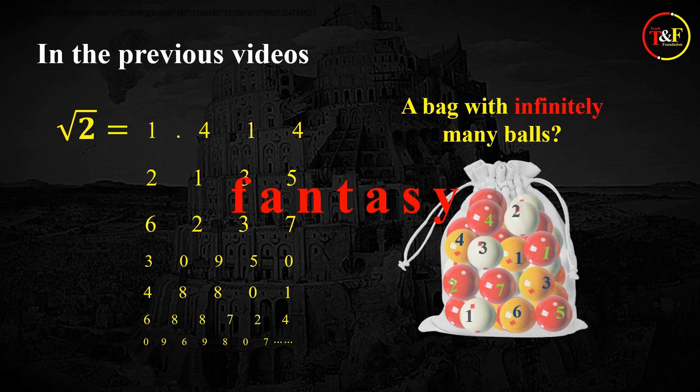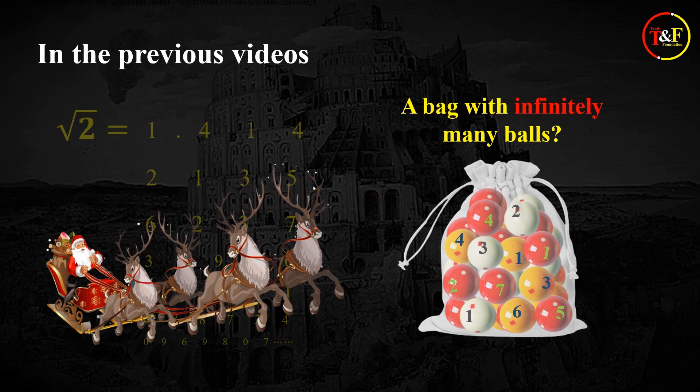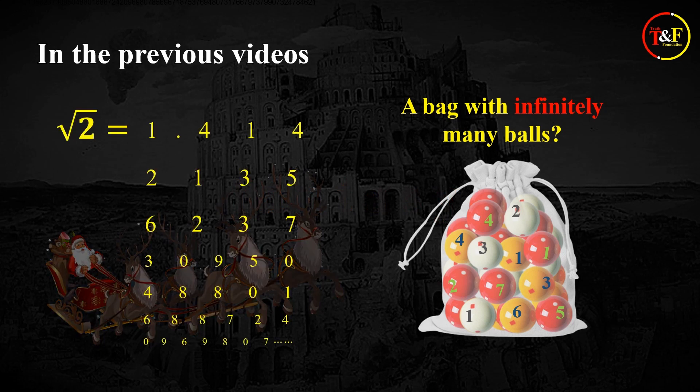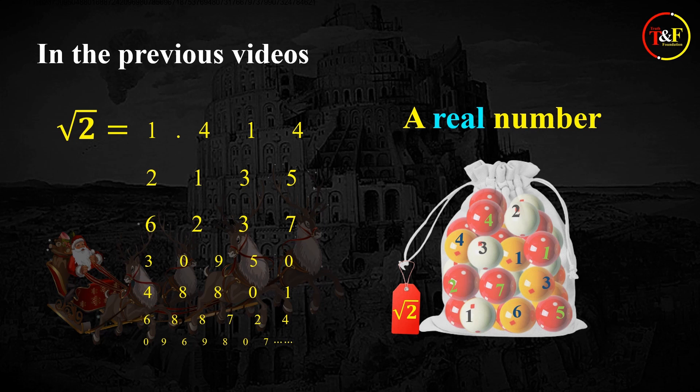You could only find these kinds of things in some fantasy worlds, such as Santa and its reindeer. Considering this, these kinds of objects that involve infinity should have been called imaginary numbers or fictional numbers, but interestingly enough, they are rather called real numbers. Why is that? Since the answer to this question will help us understand why our modern mathematics is a religion, I'm going to explain this in detail in this video.